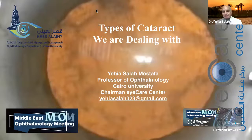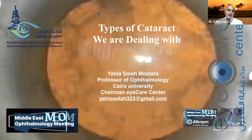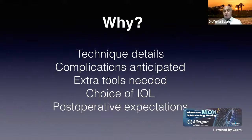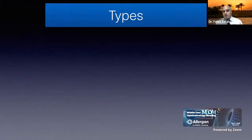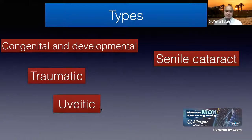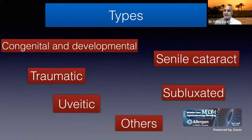This is actually an introduction to the whole episodes of cataract we're going to talk about in the coming months. If you are a beginner starting out, you really should know there are so many different types of cataract - different techniques, details, complications to anticipate, extra tools needed in difficult cases, choice of IOL, and post-operative expectations. Cataract types include congenital, developmental, senile, traumatic, uveitic, subluxated, and many others. Not all cataracts are the same.